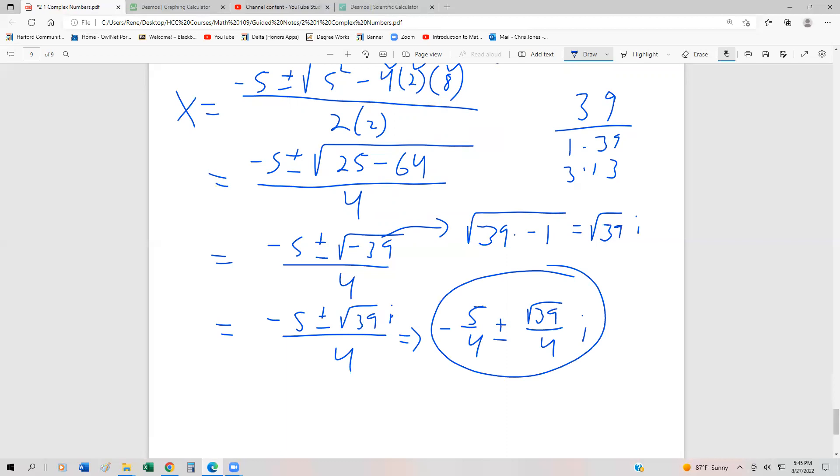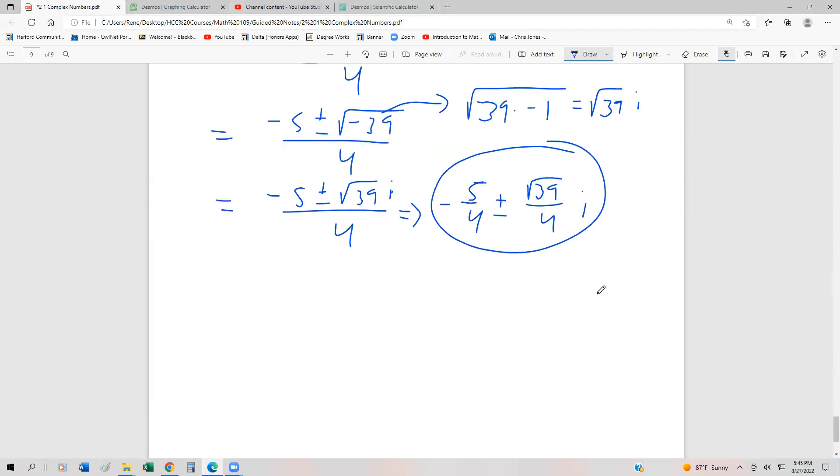Once again, notice that we get these conjugate pairs of solutions. So if we were to write this like a solution set, we would have negative 5 fourths plus root 39 over 4i, and then the other solution would be negative 5 fourths minus root 39 fourths i. So if we wanted to write it in the set notation, that's what it would look like. So those are our two solutions.